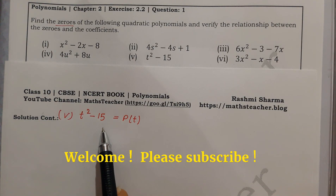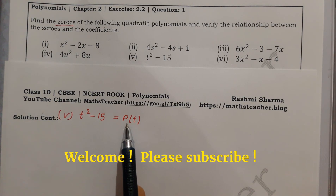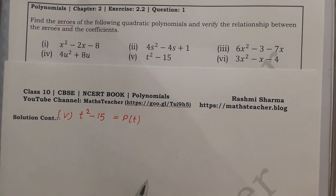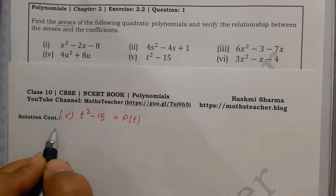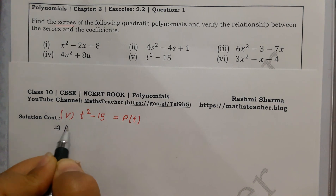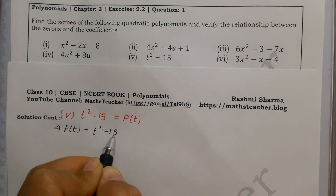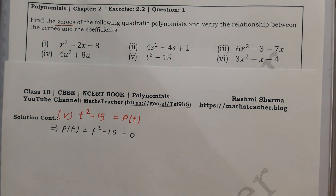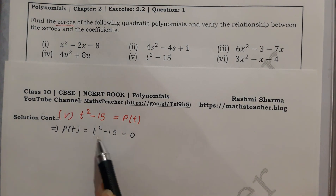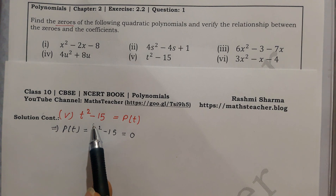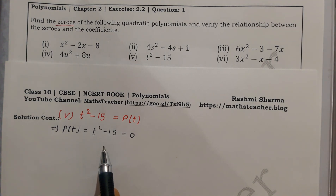The fifth part is t squared minus 15, equal to a polynomial equation in t. To find the zeros, we set t squared minus 15 equal to 0. This is also a quadratic equation, but there is no middle term — the coefficient of t is absent — so this middle term will not be split here.